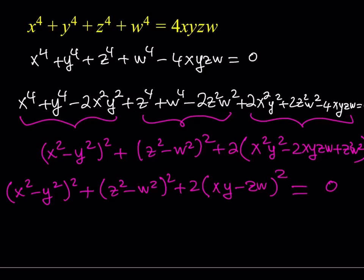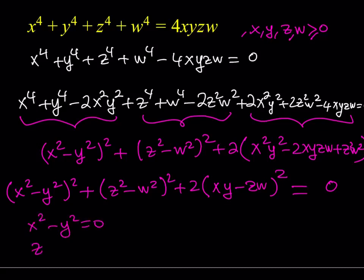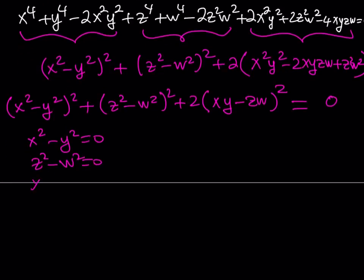Isn't that beautiful? We have zero on the right-hand side and a sum of squares on the left. Since we're looking for real solutions and x, y, z, w are non-negative, this is a sum of squares equal to zero. Since no square can be negative, every term must individually equal zero: so x² − y² = 0, z² − w² = 0, and x·y − z·w = 0.